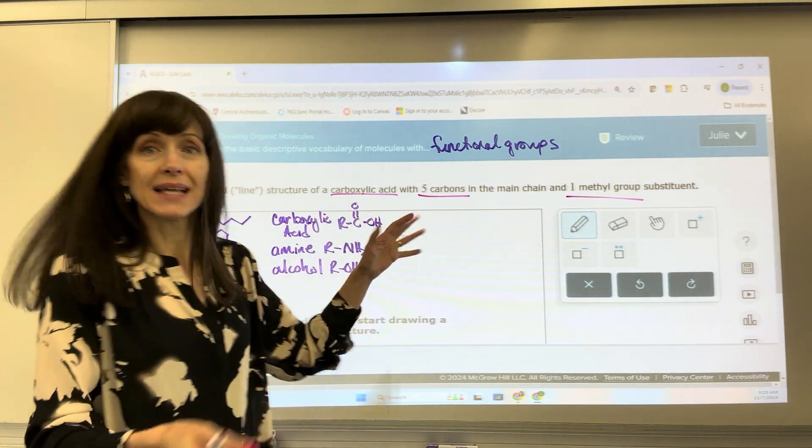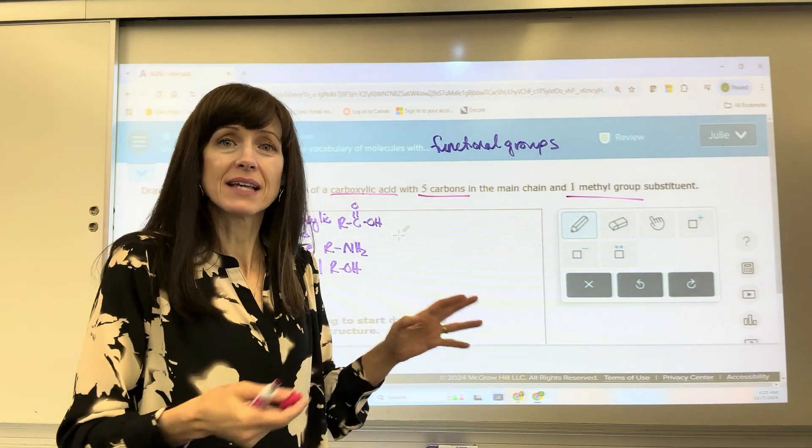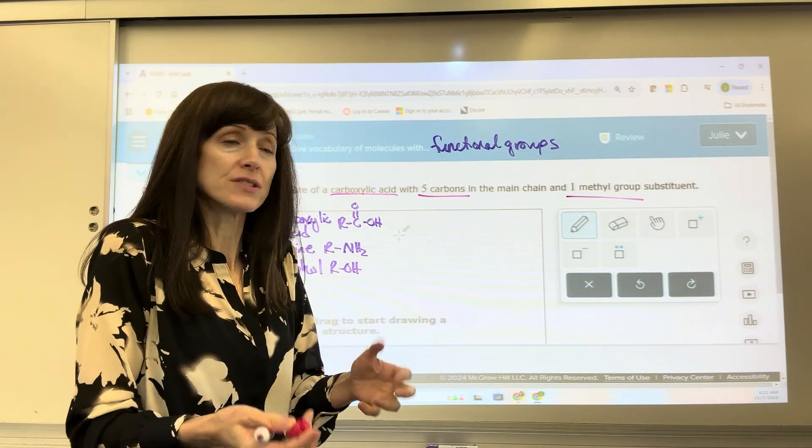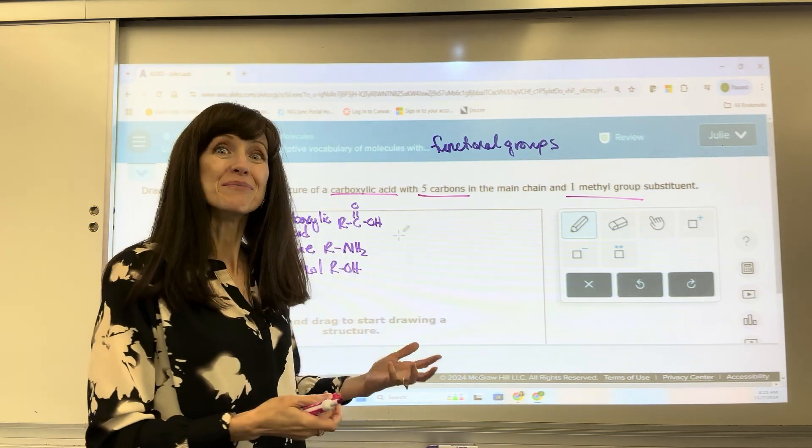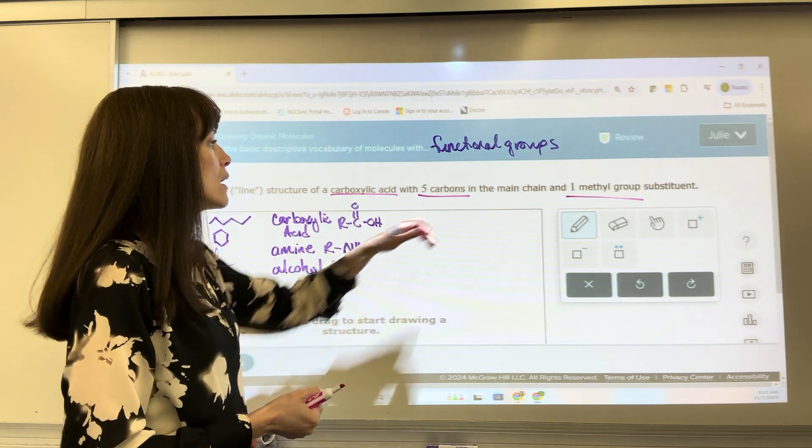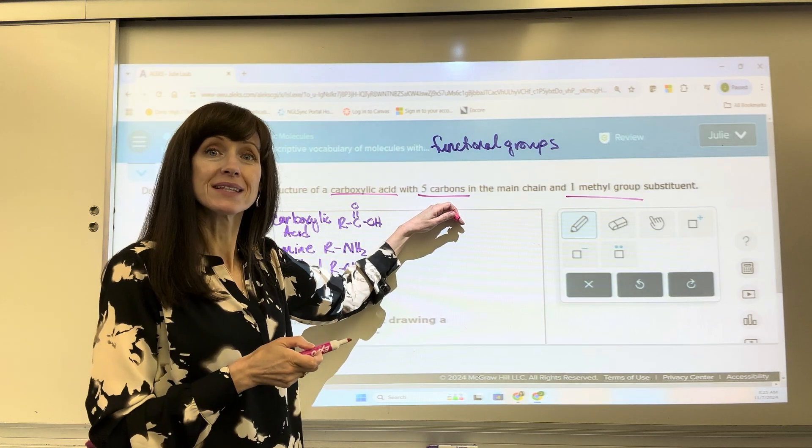Now, you can put these anywhere you want, all right? You can draw this any way you want, as long as you've got your five carbons, there's a carboxylic acid somewhere, and you've got a methyl group. So I start always with the carbons, five carbons, and this is a chain.